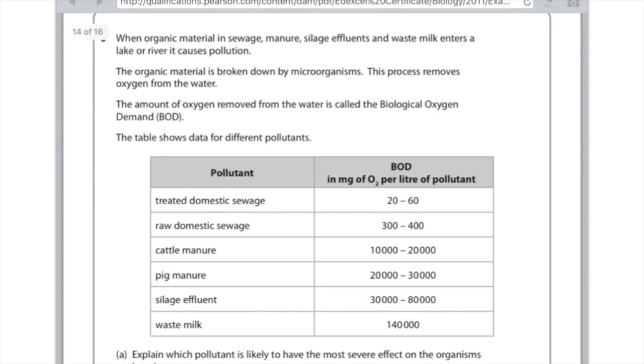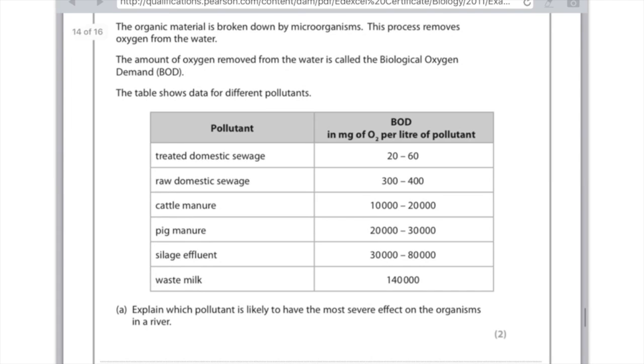Question six: When organic material in sewage, manure, silage effluents, and waste milk enters a lake, it causes pollution. The organic material is broken down by microorganisms. This process removes oxygen from the water. The amount of oxygen removed is called the biological oxygen demand, BOD. We've got quite small amounts of BOD for treated domestic sewage, ranging up to waste milk which produces a massive amount of BOD. Explain which pollutant is likely to have the most severe effect on organisms in a river.